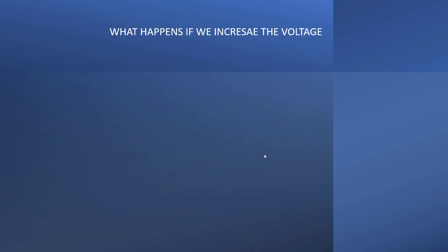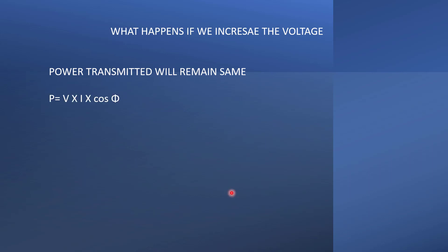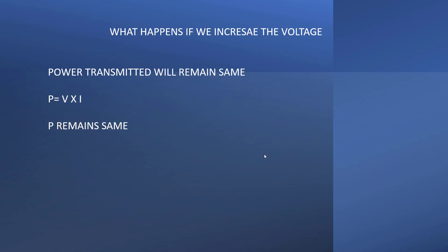What will happen if we increase the transmission voltage using a step-up transformer? The power remains the same. We know the equation P = VI cos φ, where P is power, V is voltage, I is current, and cos φ is the power factor, which is very high for transmission lines — so we assume cos φ as 1. Then the equation becomes P = V × I. Since power remains constant, increasing V means decreasing I. So if we increase the voltage while keeping power constant, it causes a reduction in current. Transmitting at high voltage means transmitting with low current.